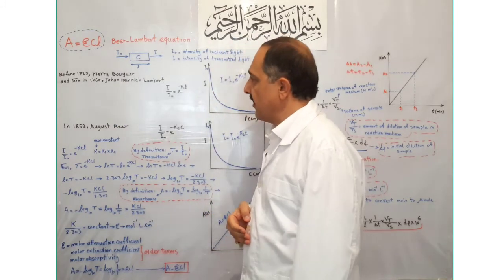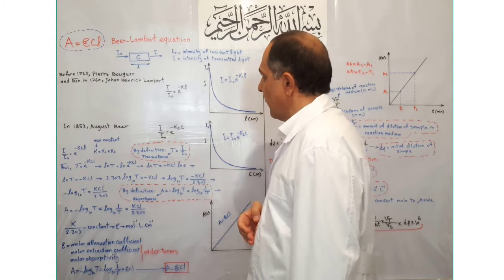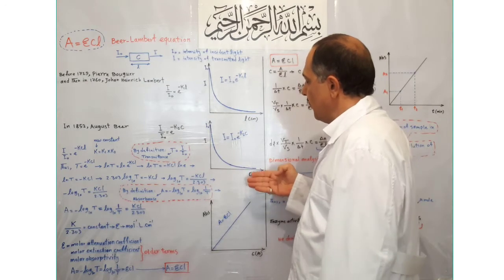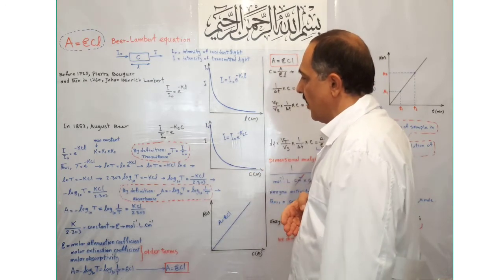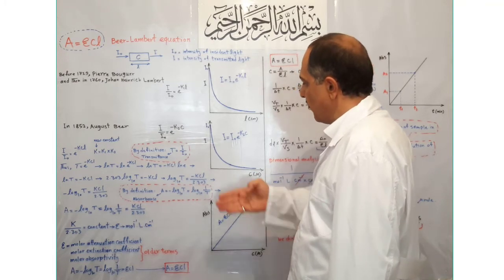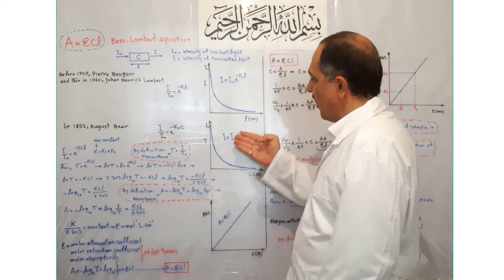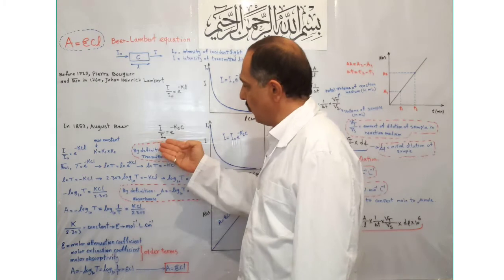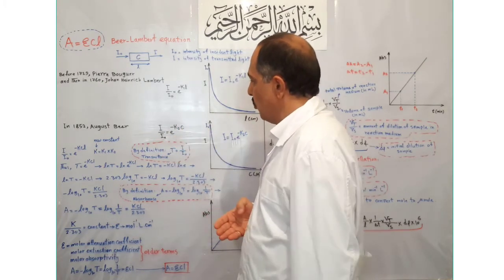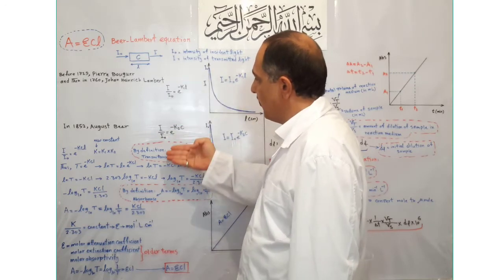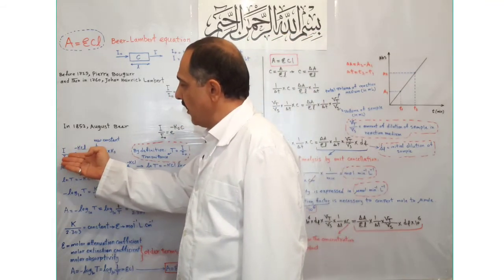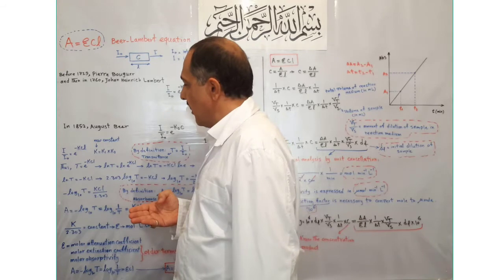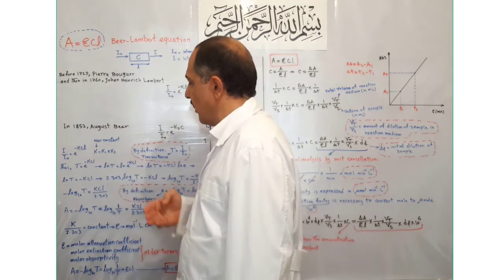In 1852, Beer showed that at a given light path length, the intensity of transmitted light decreases exponentially with an increase in the concentration of a homogeneous light-absorbing liquid. The respective equation is I = I₀ × e^(−K₂C), or I/I₀ = e^(−K₂C). Combination of these two equations gives I/I₀ = e^(−KCL), where K is a new constant equal to K₁ multiplied by K₂.